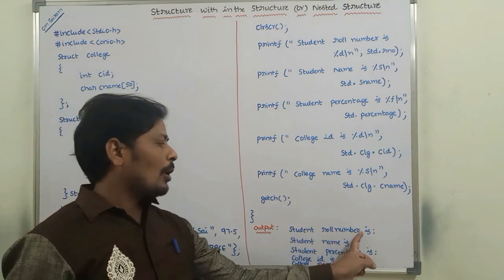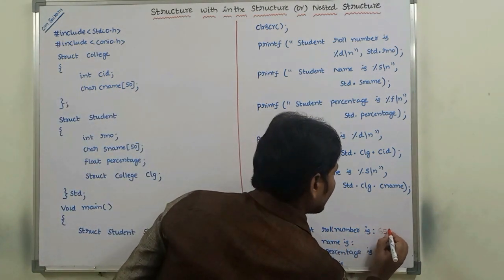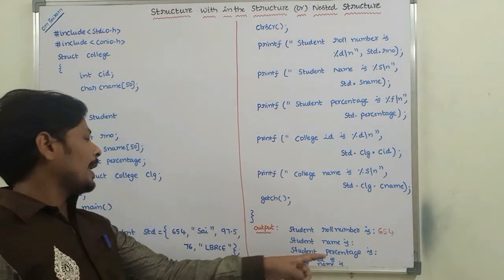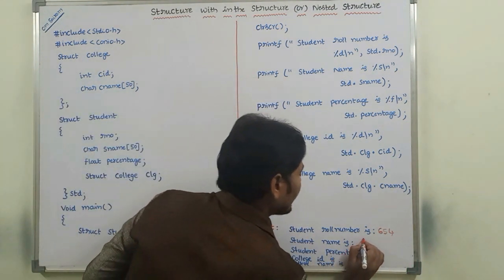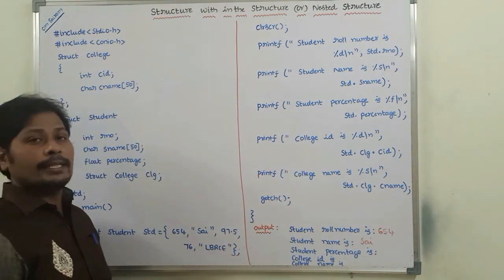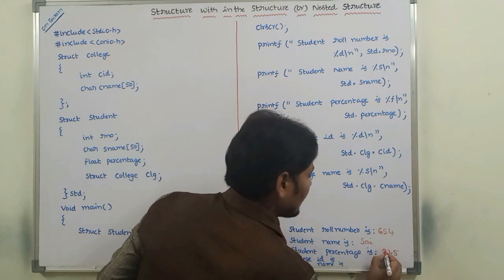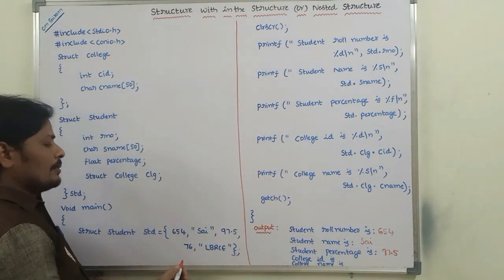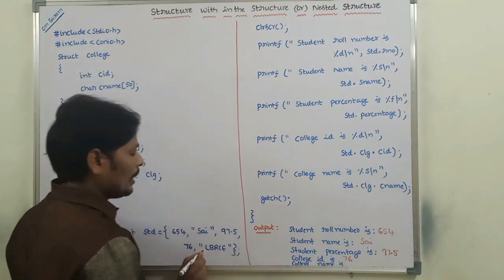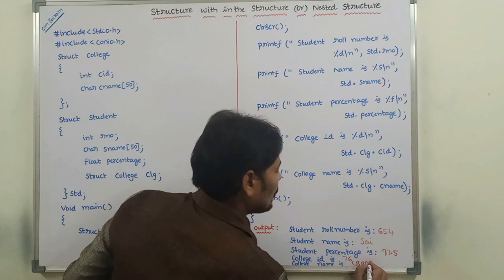The output: student roll number is 654, student name is Sai, student percentage is 97.5, college ID is 76, and college name is LDRC. This is the output we are getting.